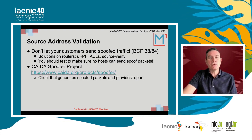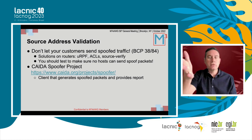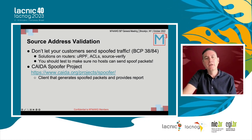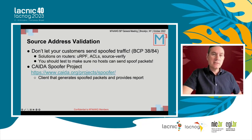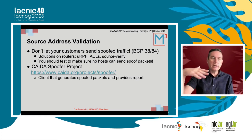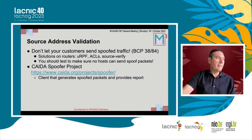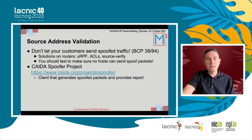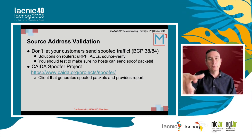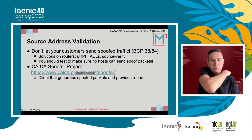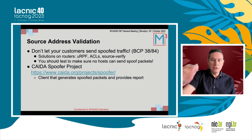Source address validation is BCP38/84. Solutions include unicast reverse path forwarding and access lists. There are also source verify commands that passively look at DHCP and filter if the DHCP-offered IP does not match what the customer is sending. You should also test to make sure you cannot send spoofed traffic from your network — the Spoofer Project from CAIDA has a client that generates spoofed traffic and produces a report.